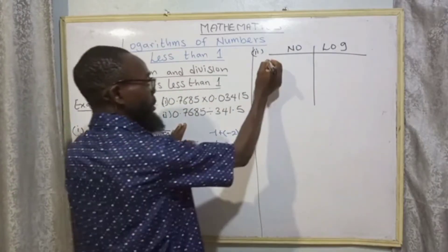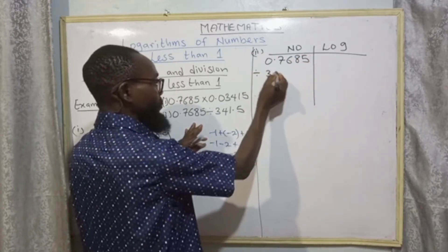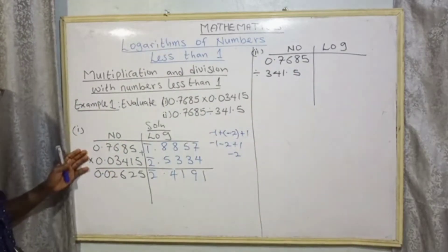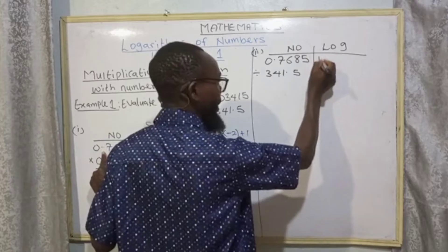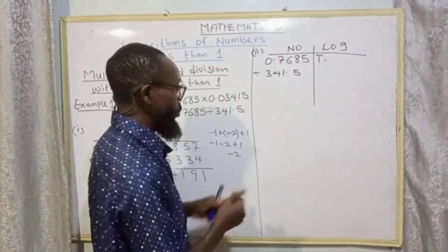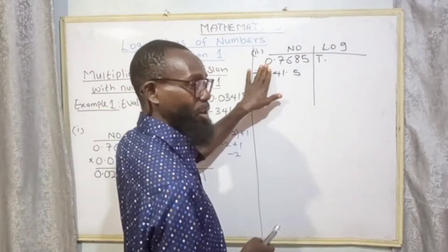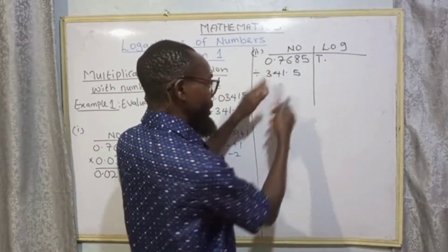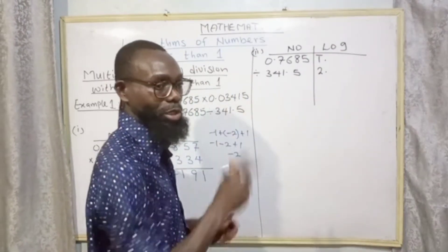Example 1b: we have 0.7685 divided by 341.5. We set up the number-log table. The integer of 0.7685 is bar one as done in the previous example. For 341.5, this does not start with zero — you cover the first digit and count the digits behind it without jumping the decimal point: one, two digits — so we call it 2 points, not bar two.